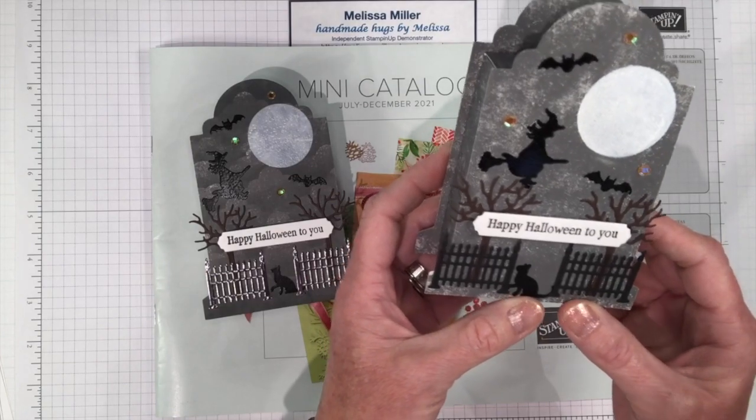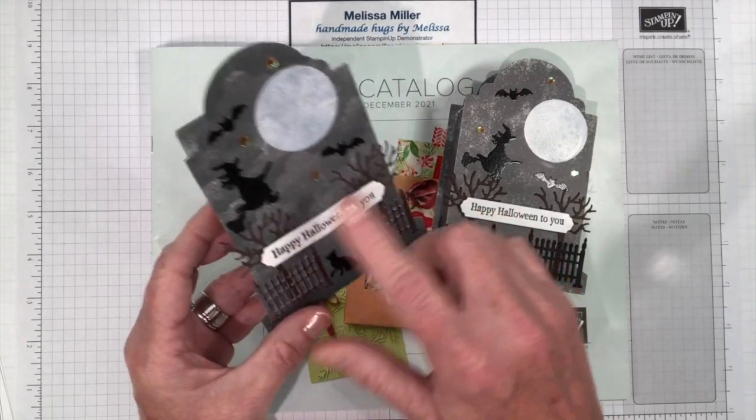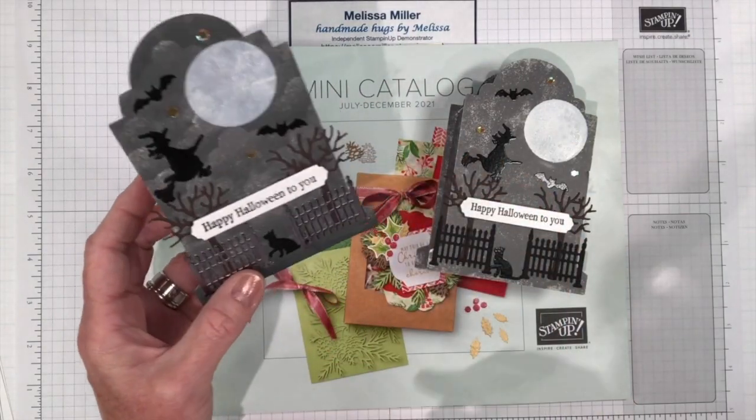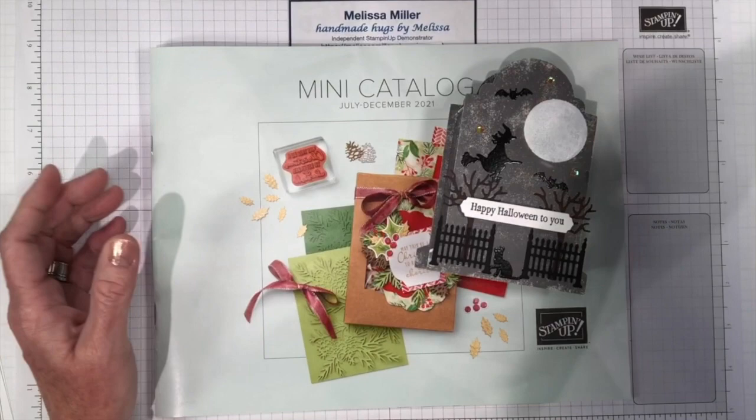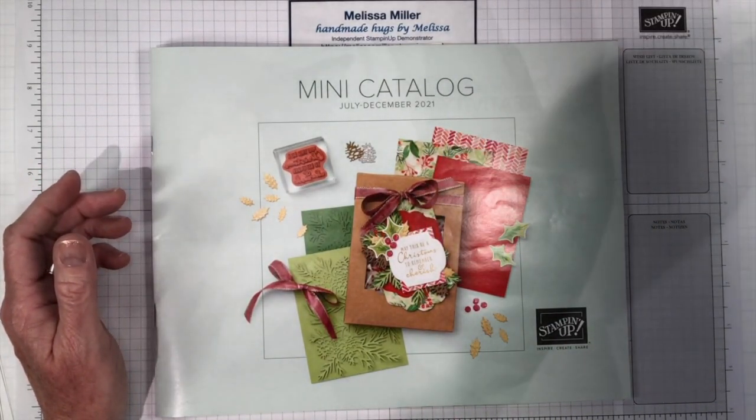So we're going to be doing some scene building. I thought since they are tombstones we would try to make it into a little cemetery scene. We're going to be doing some heat embossing, some masking, some ink blending, and then our die cutting.